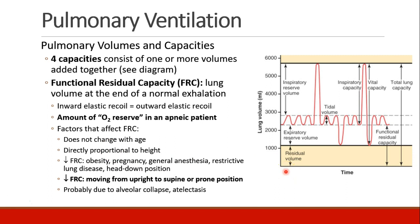Factors that affect the FRC are important to know. FRC does not change with age and is most directly proportional to height — taller patients have a larger FRC. Many factors decrease FRC: obesity, pregnancy, general anesthesia, restrictive lung disease, and the head-down position all decrease FRC. Moving a patient from an upright to a horizontal position — supine or prone — also decreases FRC, in part due to collapse of the alveoli, which is atelectasis.